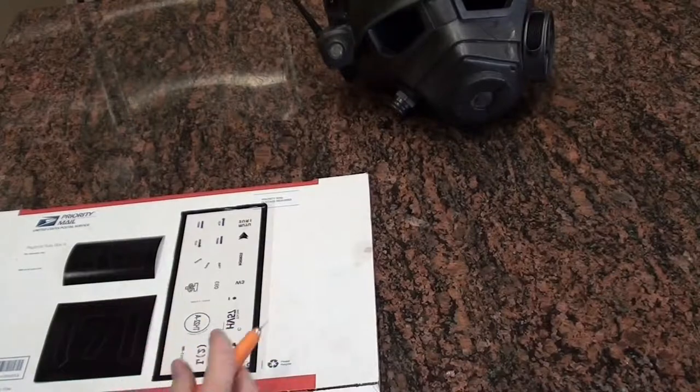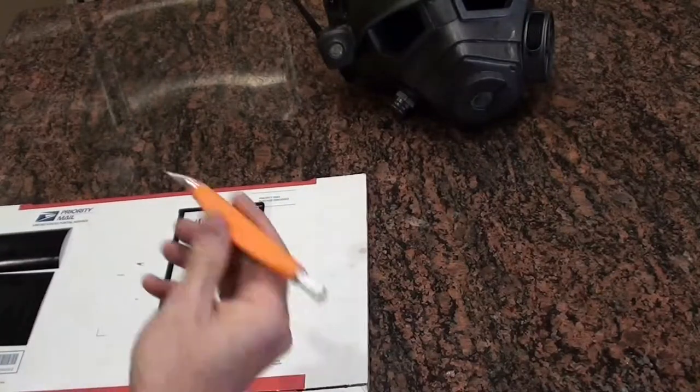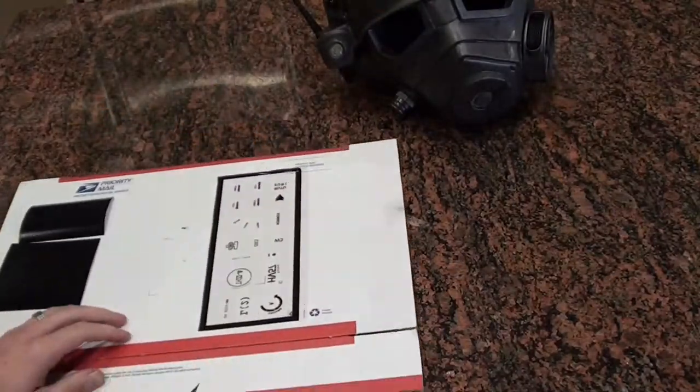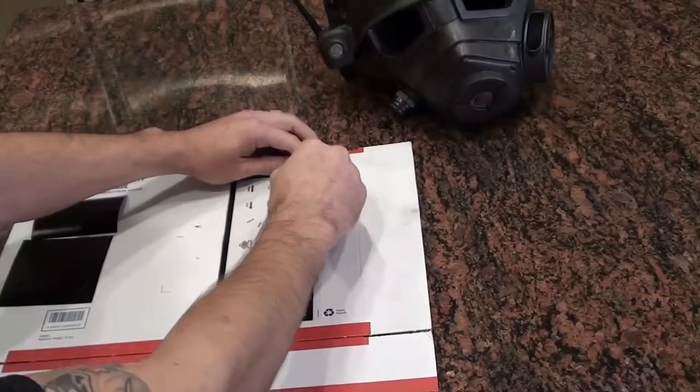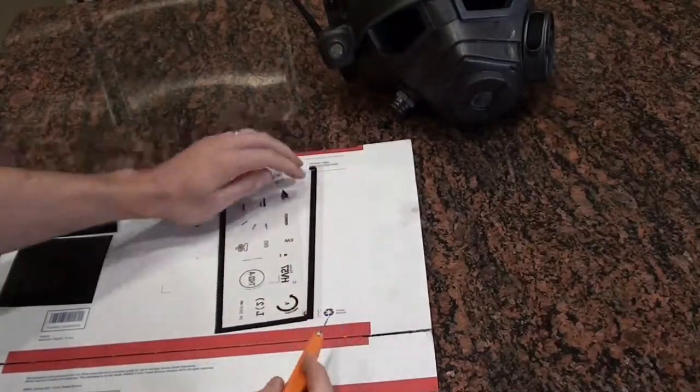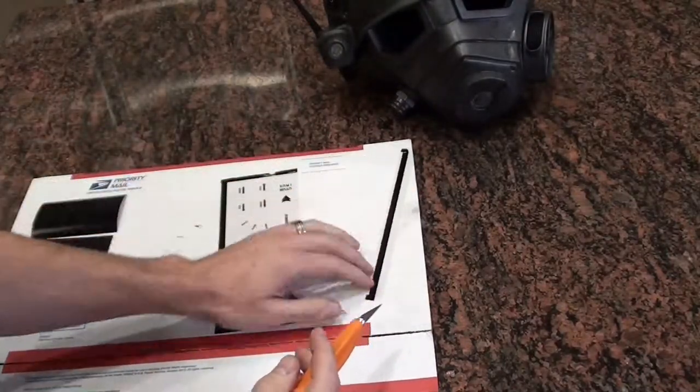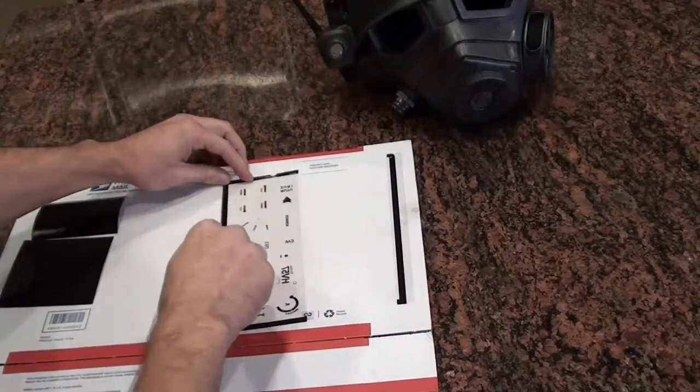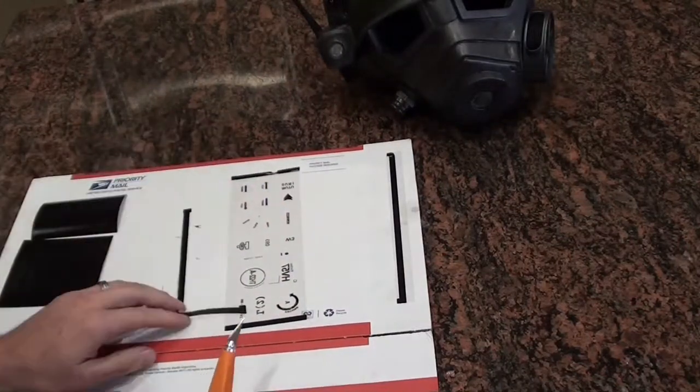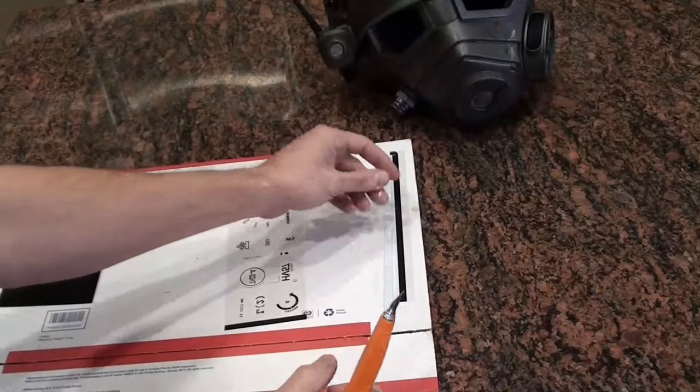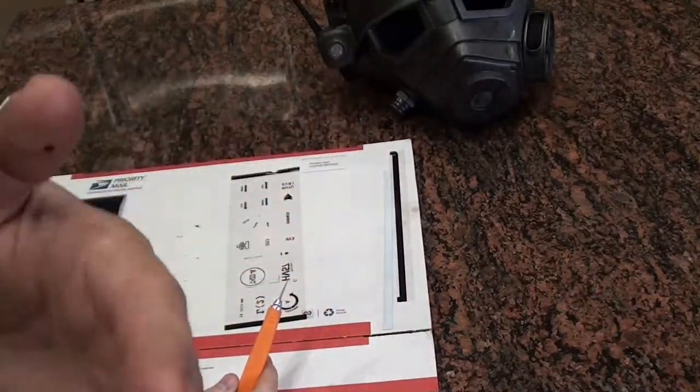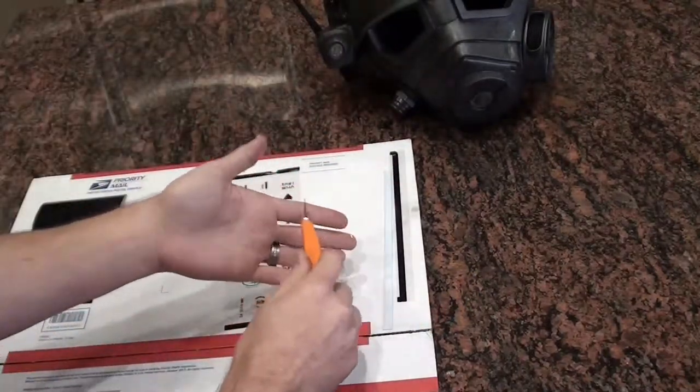First step is to use an exacto blade to cut the border off of the transfer sheet. And be careful not to touch the back side, which is the black side of the transfer decals. The oils on your skin can cause the decals to stick to your fingers and that'll just mess them up.